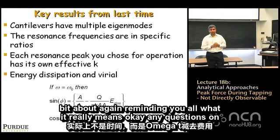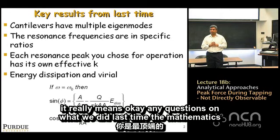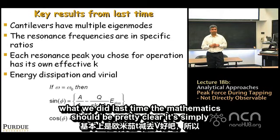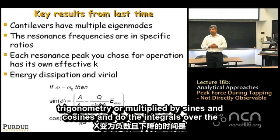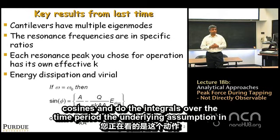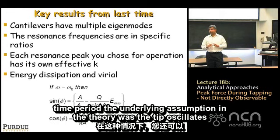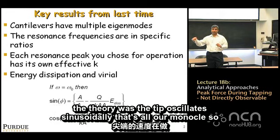There is another quantity related to cosine of phase lag, which we call the virial. The mathematics should be clear — it is simply trigonometry: multiply by sines and cosines and integrate over the time period. The underlying assumption in the theory is that the tip oscillates sinusoidally, i.e., harmonically.